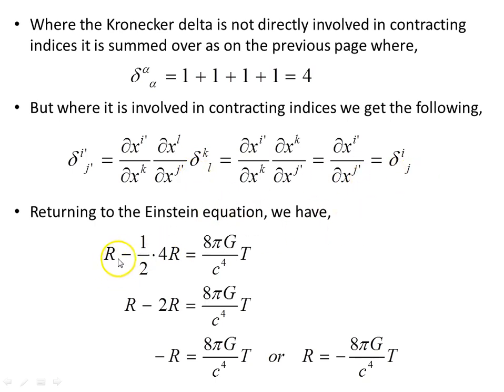Now, returning to the Einstein equation, we have, substituting in our result previously we found, with the Kronecker delta, we contracted, we're taking the trace of that, the Einstein field equations. It's given us this object here. If we now do the algebra, R minus 2R, this object here, or minus R is equal to this, or R is equal to this object here.